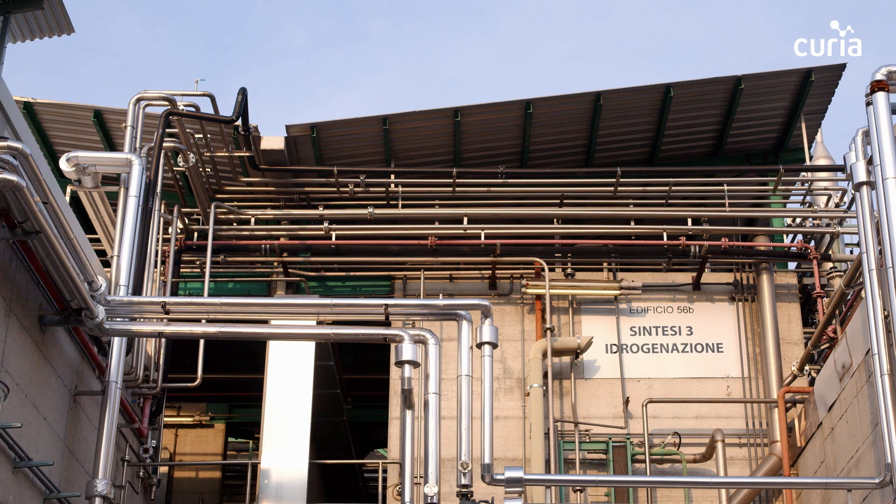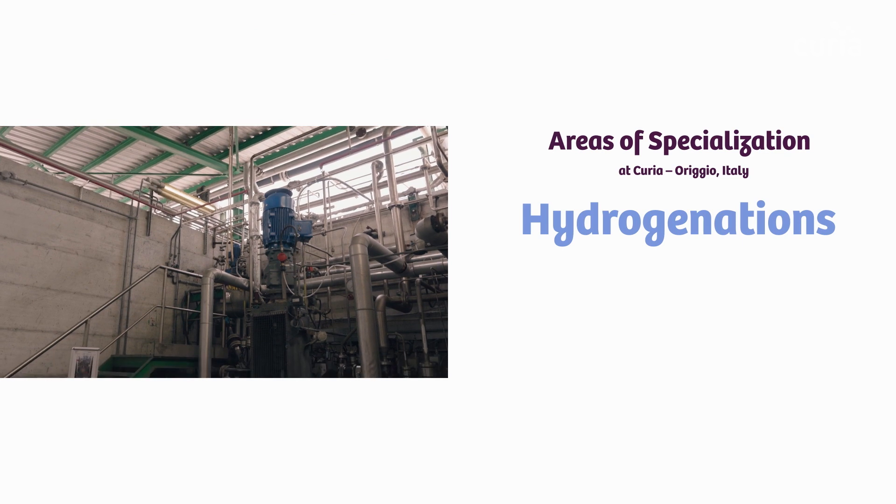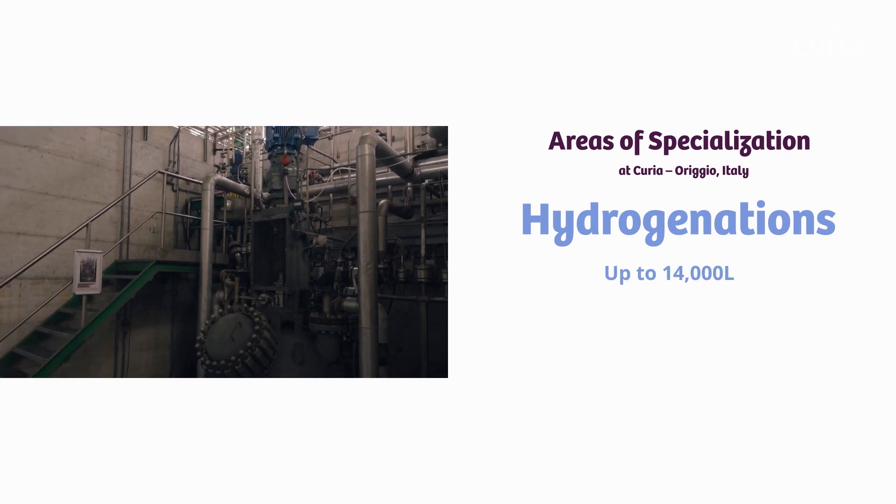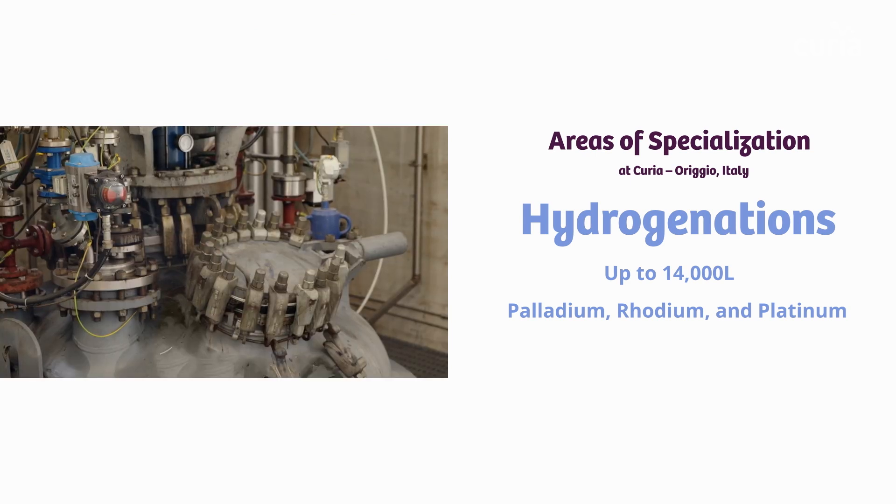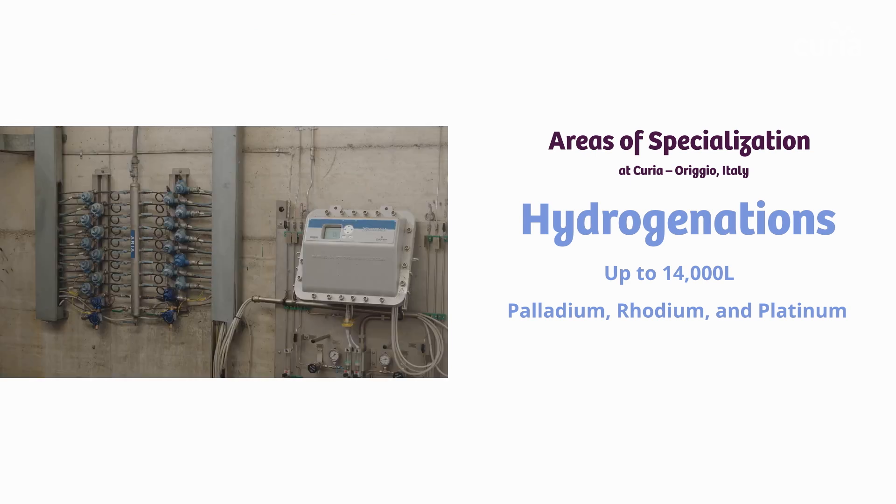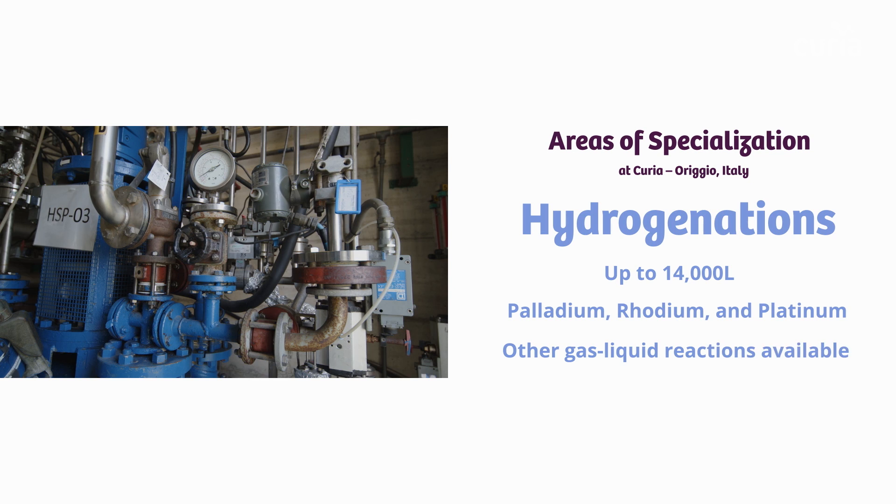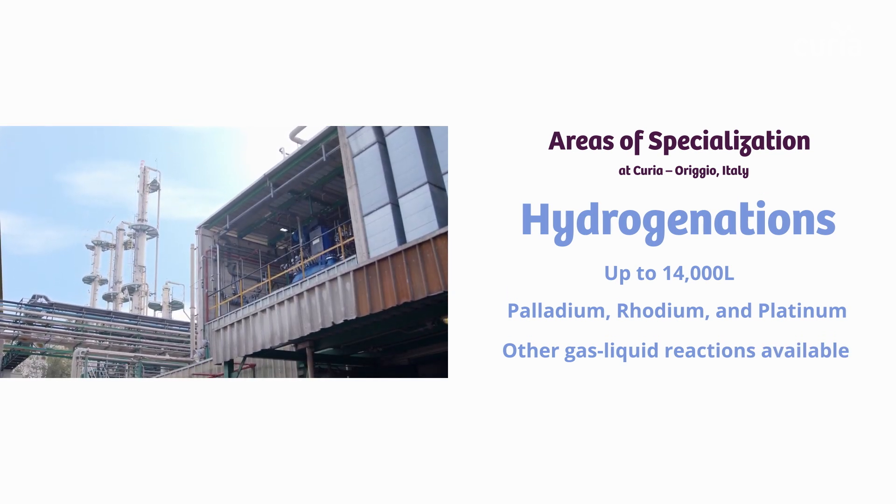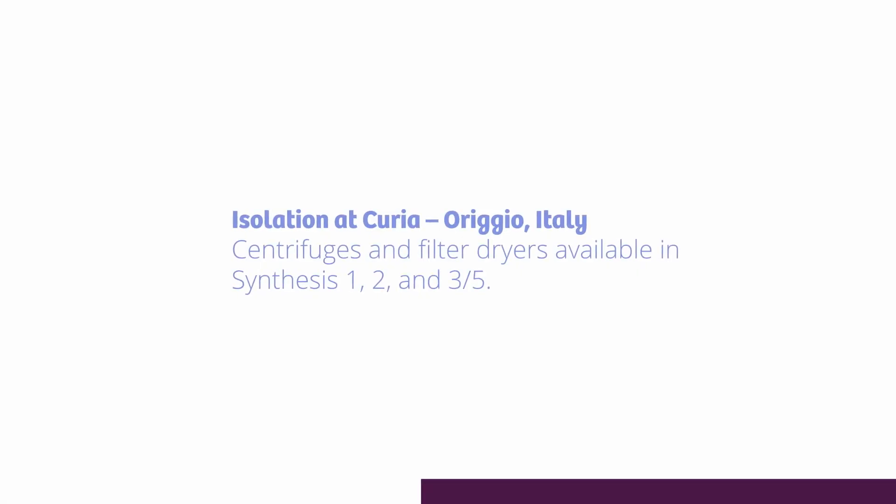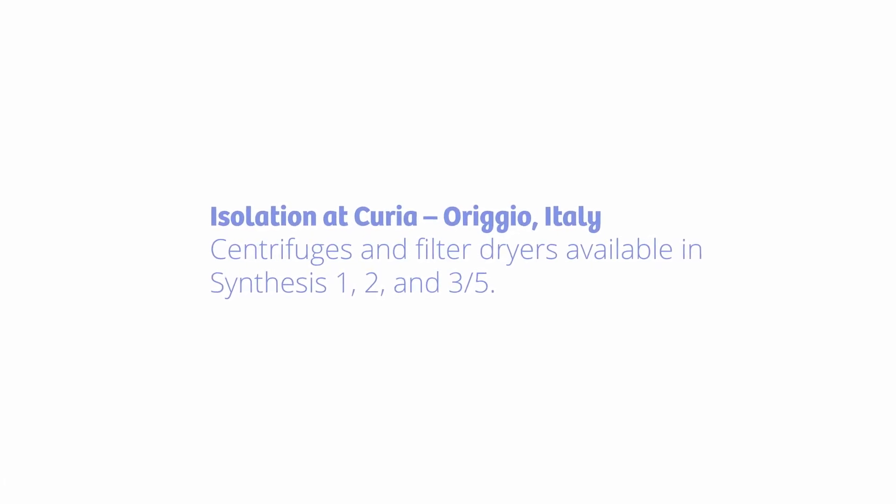Synthesis 3 is home to five hydrogenators with volumes up to 14,000 liters. Metal catalysts include palladium, rhodium, and platinum. The hydrogenators also accommodate other gas-liquid reactions using ammonia, hydrochloride, sulfur dioxide, and carbon monoxide.